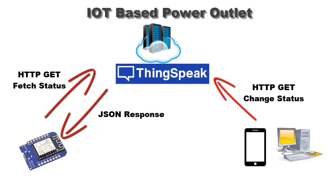And when the Wemos module again requests for the different load status, it will get a JSON response. ThingSpeak.com is totally used as just an intermediate between our mobile devices and Wemos, because we can't directly access the Wemos module without using any public IP or other concepts directly from our devices using the internet. And one more thing — it also stores the latest status of the devices.